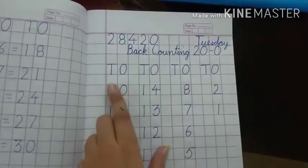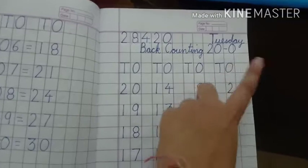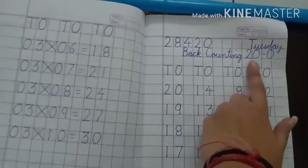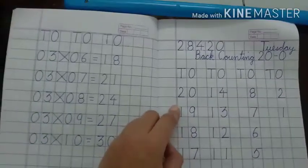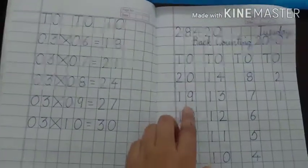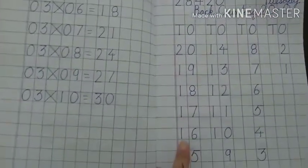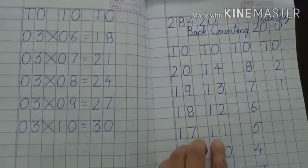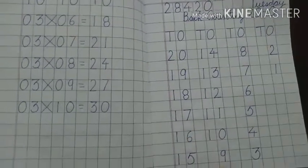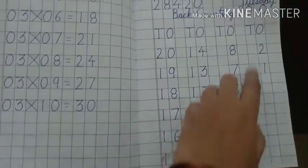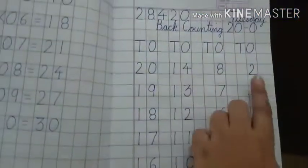Agar aapne 20 se back counting likhni hai to aap sabse pehle kaun sa number likhoge? 20. 20 se wahi se start karoge na? Then what you will write? Aapne pichhe aana - 19, 18, 17, 16, 15, 14, 13, 12, 11, 10, 9, 8, 7, 6, 5, 4, 3, 2, 1, 0. Ab dekho.